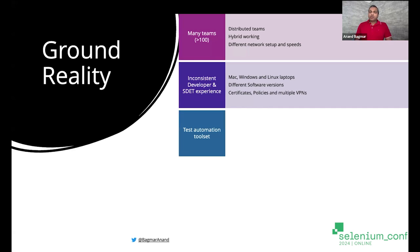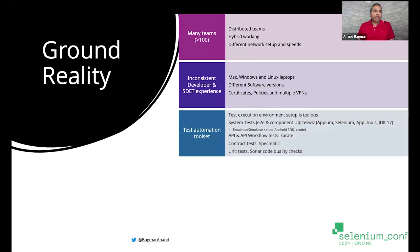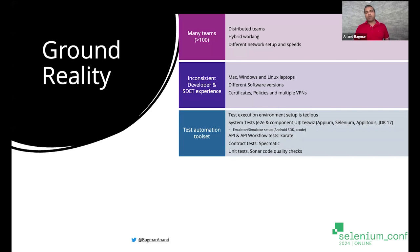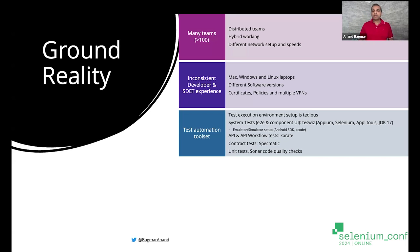The test automation toolset also varies significantly, and that environment setup is also very tedious. If you're doing end-to-end test automation using TestWiz, you're going to need Appium, Selenium, and JDK 17. If you're using any other type of tool, it will have its own requirements. You would also need emulators and simulators set up. If you are doing API or API workflow automation, that toolset is going to be different. Different types of test automation have different tech stacks.